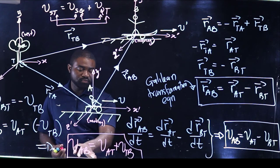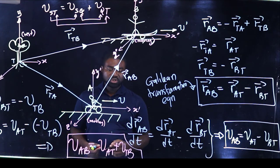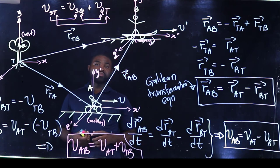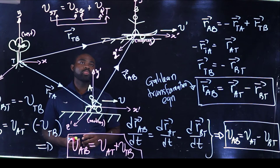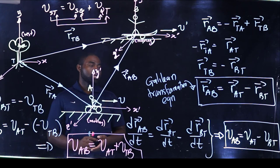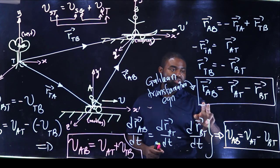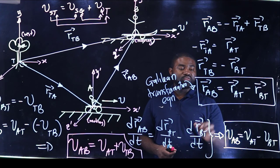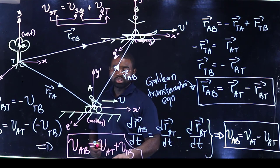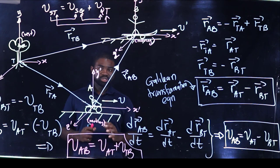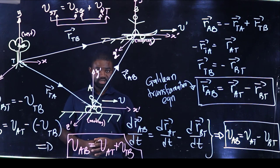I can further differentiate this equation to give us the law of addition of accelerations. Just to recap the main points: the motion of any system is always relative. The relative position of A with respect to B is given by the Galilean Transformation Equation. If we differentiate this equation, it yields the law of addition of velocities. I'm going to solve some examples so that you could understand how to use all of this. Thank you so much.